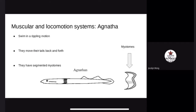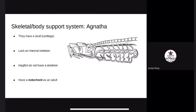The muscular and locomotive system. Agnatha swim in a rippling motion by moving their tail back and forth. They have segmented myotomes, or groups of muscles, in which the muscle fibers are arranged in muscle units consisting of white fibers placed centrally and red fibers surrounding them as a superficial layer. The central fibers are typically twitch fibers, which help them endure swimming long distances. The skeletal system: Agnatha have a cartilaginous skeleton. Agnatha develop a notochord as an adult — a support rod that runs along the back of the fish — which is why scientists categorize them under vertebrates.